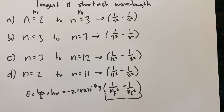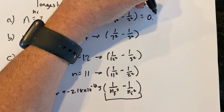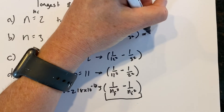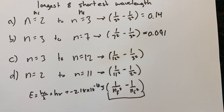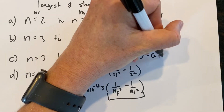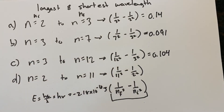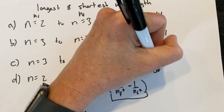For the first one: 1 divided by 9 minus 1 divided by 4, and taking the magnitude I get 0.14. For the second: 1 divided by 49 minus 1 divided by 9. For the third: I get an answer of 0.104. And for the fourth: 1 divided by 6 squared minus 1 divided by 2 squared, and here I get an answer of 0.24.